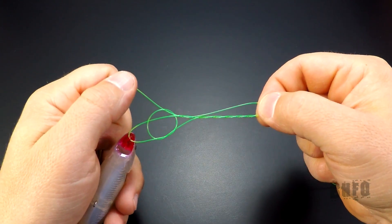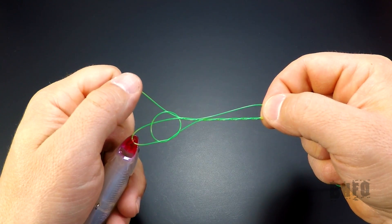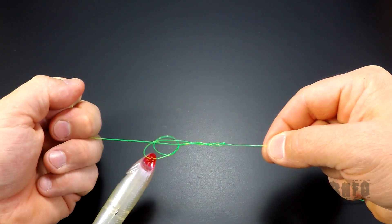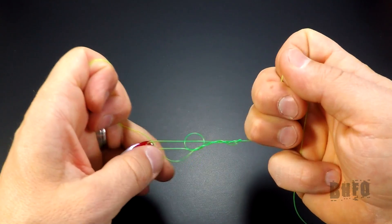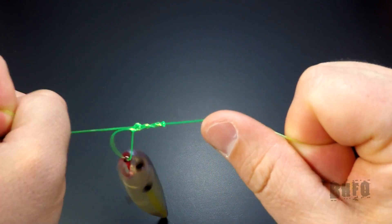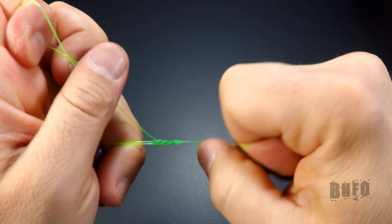After the line has been lubricated, it's time to cinch up the knot. While holding the tag and the main line, slowly start pulling the main line while positioning the knot distance from the lure. The loop should be about an inch long.